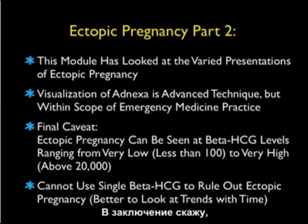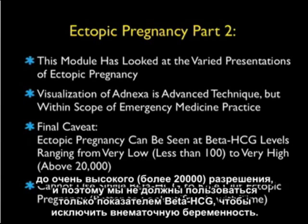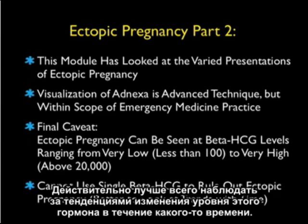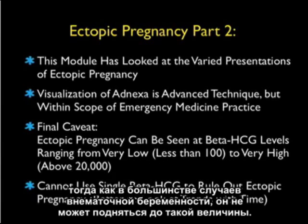As a final caveat, ectopic pregnancies can be seen at beta-HCG levels ranging from very low — less than 100 — to very high above 20,000, and thus we cannot use a single beta-HCG level to rule out ectopic pregnancy. It's better to look at trends in this hormone level over time. With an intrauterine pregnancy, the level should double in 48 hours, whereas in most ectopic pregnancies it will not climb to the same degree.